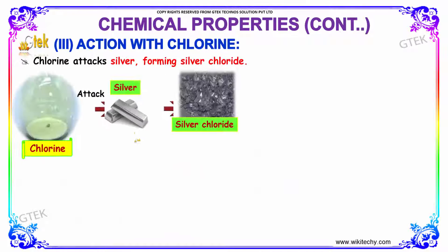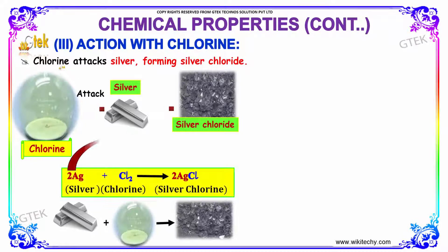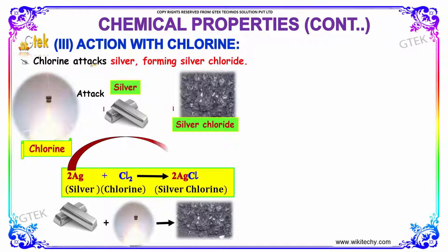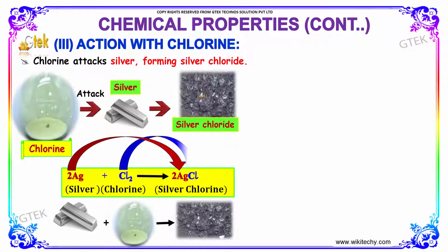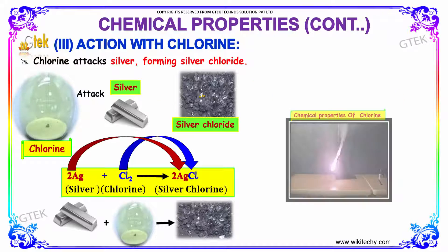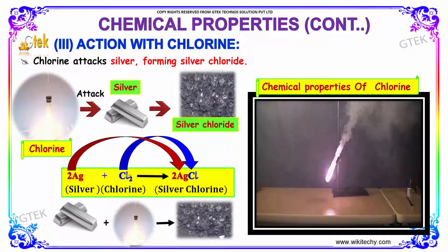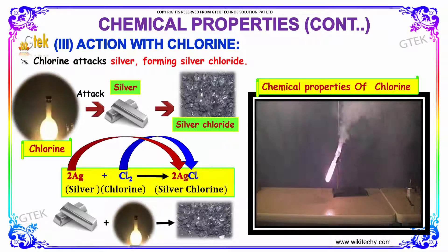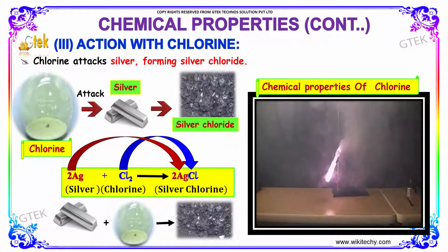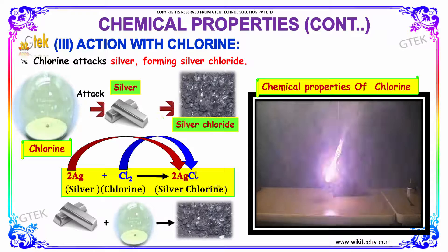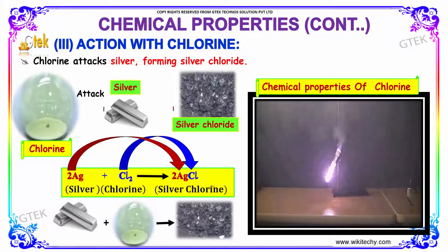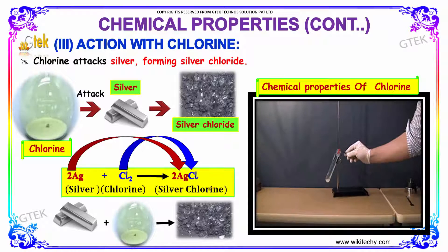Action with chlorine: Chlorine attacks silver forming silver chloride. Ag with Cl2 will give AgCl, silver chloride.